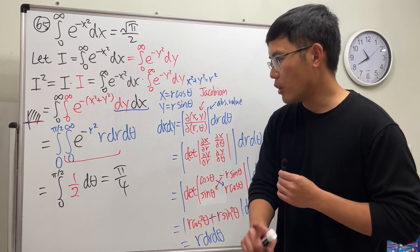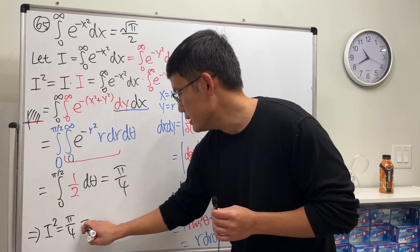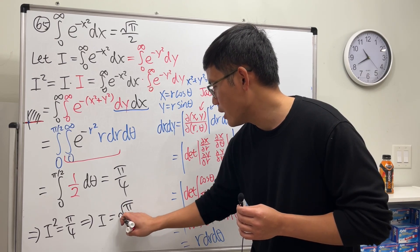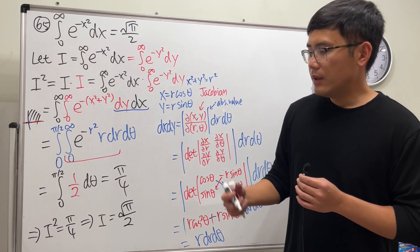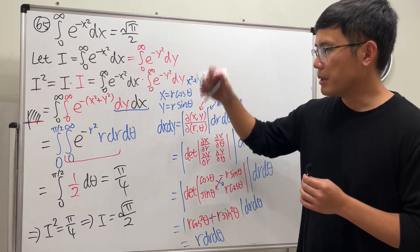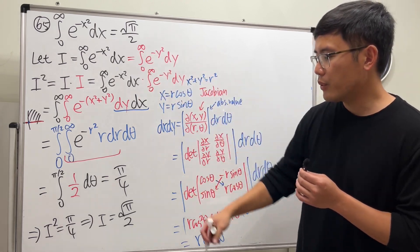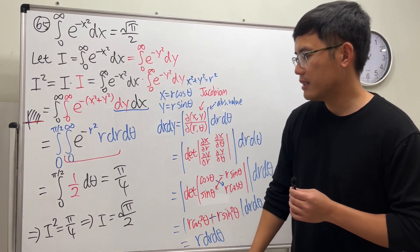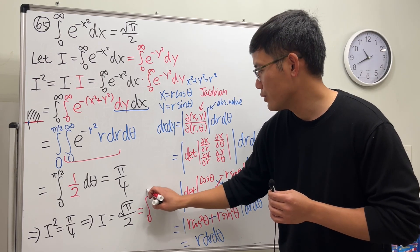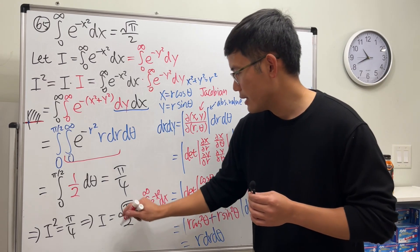We're not done yet — we have I squared equals pi over four, which means I equals the square root of pi over two. We take the positive root because e to the negative x squared is always positive, so the area under the curve is positive. Therefore, the integral from zero to infinity of e to the negative x squared dx equals the square root of pi over two.